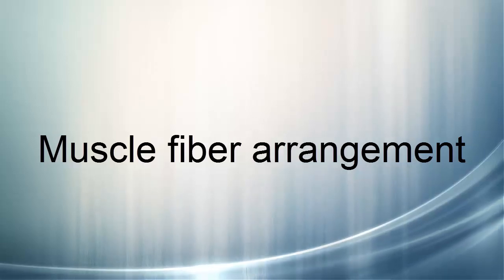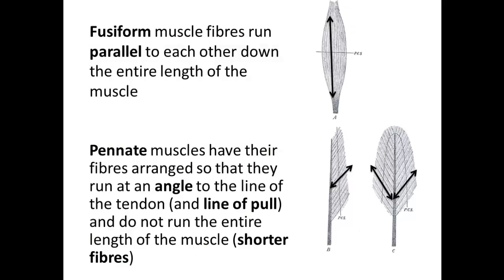Today we'll look at the two main types of muscle fiber arrangements. First, fusiform muscle fibers, where fibers run parallel to each other down the entire length of the muscle. Second, pinnate, where the fibers are arranged at an angle to the line of pull of the tendon.